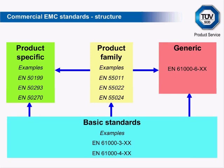Product family standards relate to a particular product family, e.g. information technology, industrial, scientific and medical. There is particular significance to EN 55011, 55014, and EN 55022 in that, as well as being product family standards derived from CISPR original documents, they are applied very widely and referenced from generic and product-specific standards. Product-specific standards relate to a particular type of product — for instance welding equipment, road traffic signal systems, electricity meters, gas detectors. It is quite common for a product-specific standard not to cover all EMC phenomena, so another standard such as a generic standard is needed to complete the coverage.